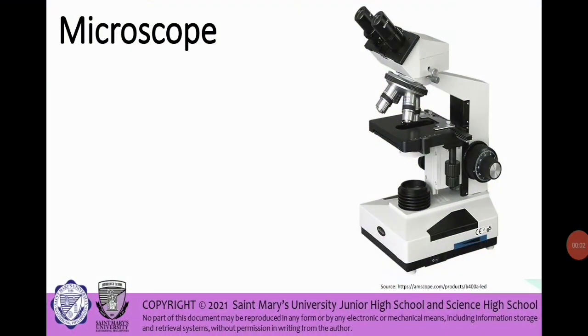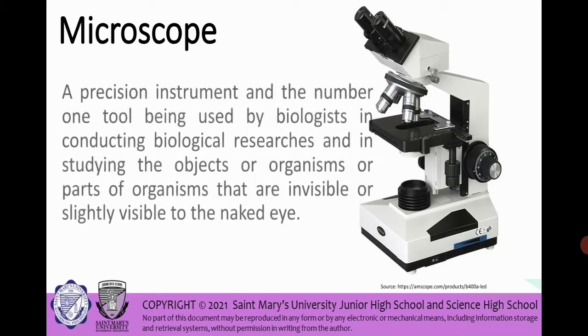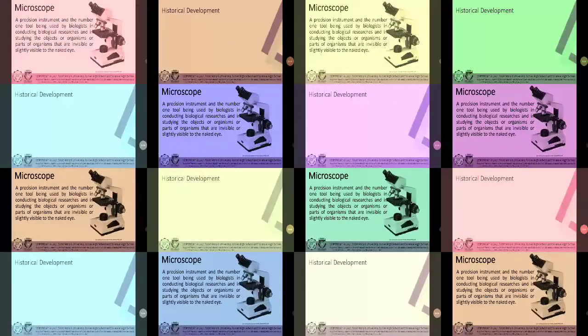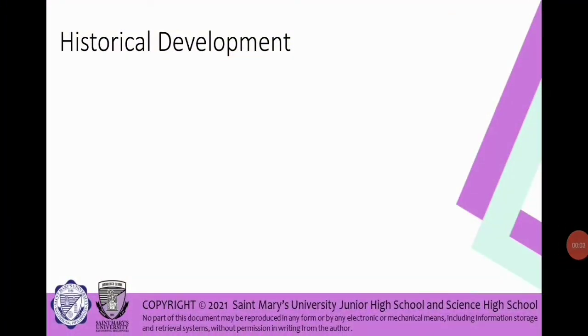Now you have the background on the development of our microscope. Now we will define the formal definition for microscope. A microscope is a precision instrument and the number one tool of being used by our biologists in conducting biological researches and in studying the objects or organisms or parts of organisms that are visible or is likely visible to our naked eye.